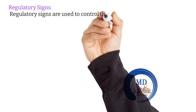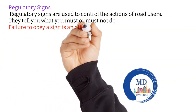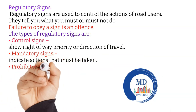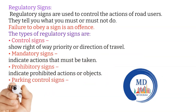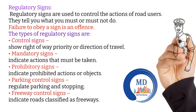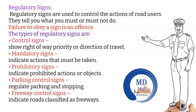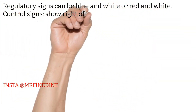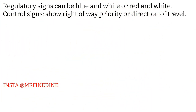Let's start with regulatory or road law signs. Regulatory signs are used to control the action of the road user — they tell you what you must or must not do, and failure to obey these signs is an offense by law. These can be further divided into: control signs, mandatory signs, prohibitory signs, parking control signs, and freeway control signs. Regulatory signs can be in blue and white or red and white colors.